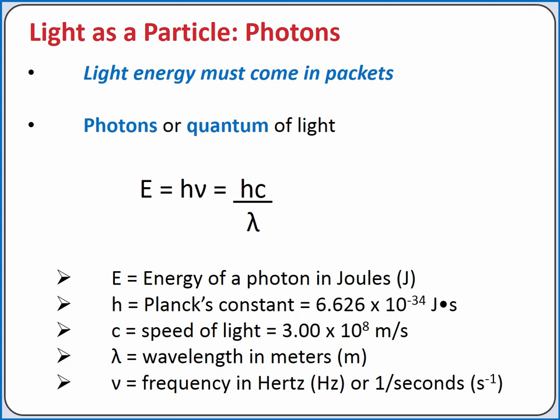The energy of a photon depends on the frequency according to the equation: energy equals Planck's constant times frequency. Since frequency and wavelength are inversely proportional, we can also say energy equals Planck's constant times the speed of light divided by the wavelength.